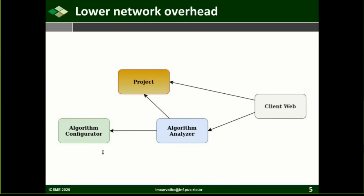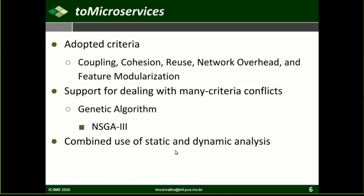In fact, it is far from trivial identifying microservices. Empirical studies point out that developers usually consider at least four criteria as useful. To provide better support for developers dealing with several criteria, we propose µTosca, which is an automated approach with the aim of identifying microservices from a legacy system. µTosca adopts five criteria indicated as useful by developers: namely coupling, cohesion, reuse, network overhead, and feature modularization.